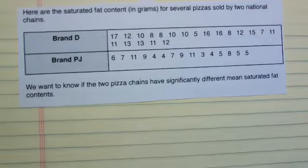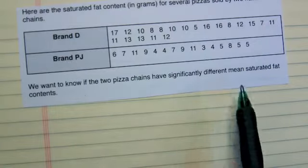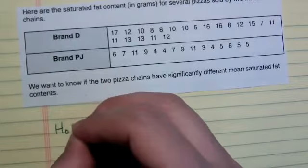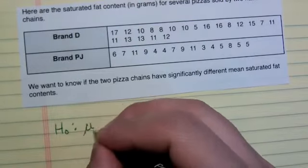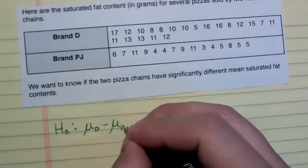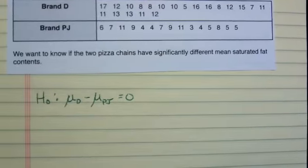Let's go ahead and see if we can write our hypotheses. Now the question is, are they different? We have different mean saturated fat contents, and our null hypothesis as usual is, no of course you don't. There is no difference between the two. So the average of Brand D minus the average of Brand PJ, I suspect is going to be zero. That's my null hypothesis, there is no difference between the two.